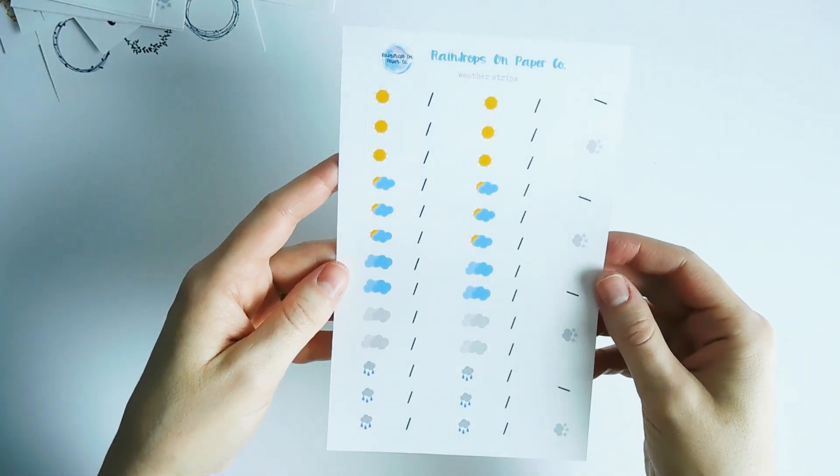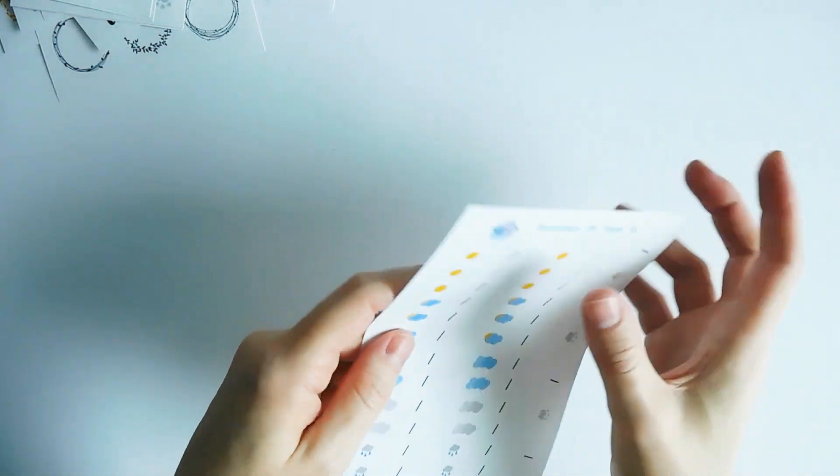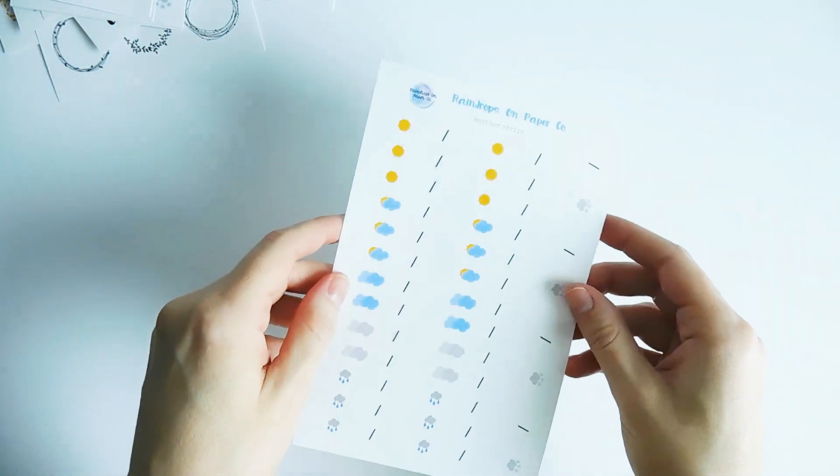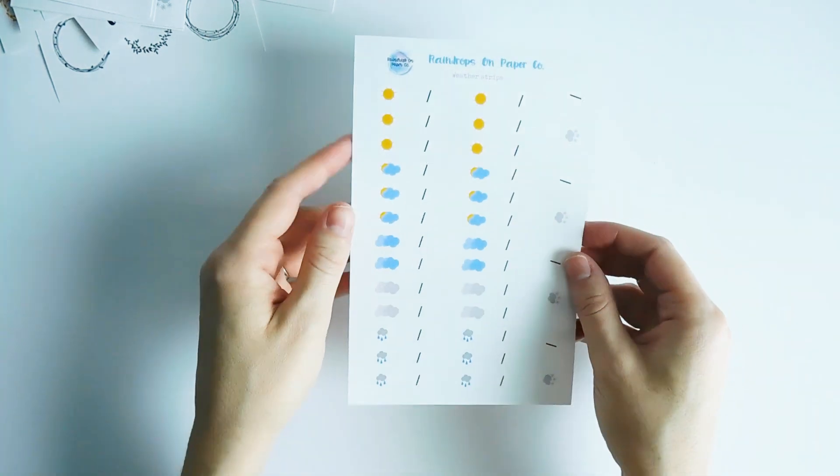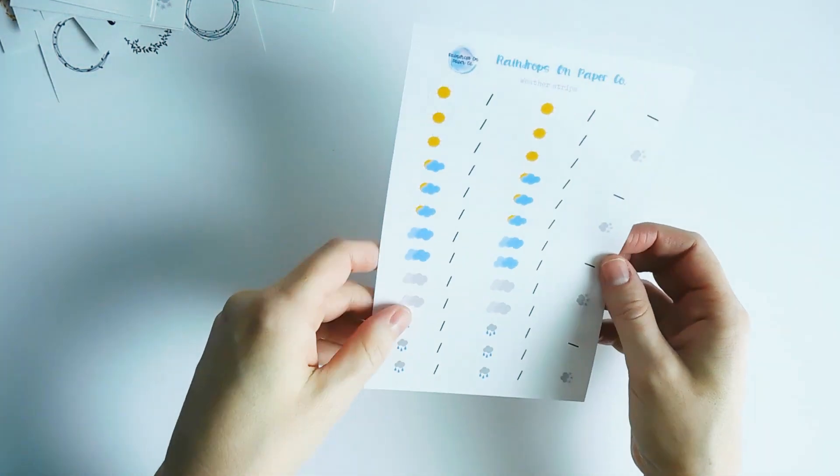And then here is my weather strips sheet. A lot of planner people like to record the weather in their planners or on their calendars. So I wanted to create something where you could keep track of the high and low temperatures for the day.